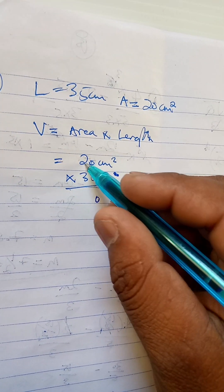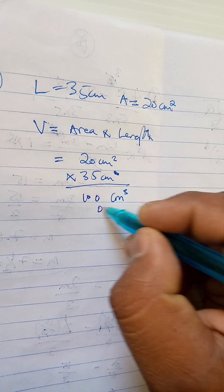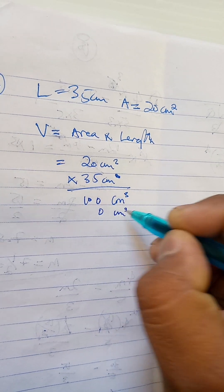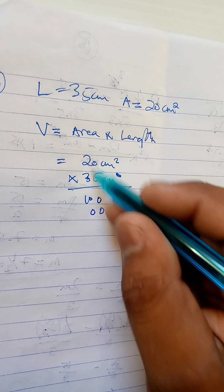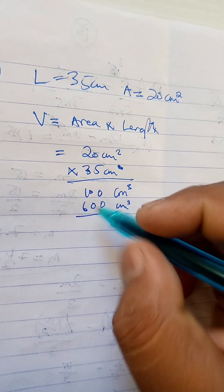Okay, so multiply: 5 times 0 is 0, 5 times 2 is 10. For the placeholder, 3 times 0 is 0, 3 times 2 is 6.